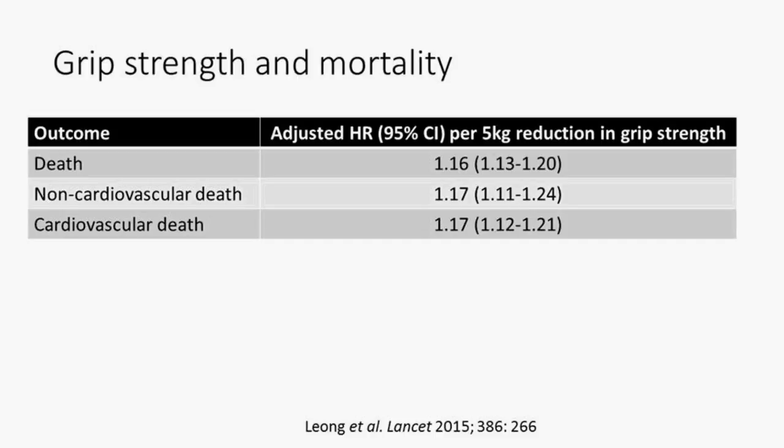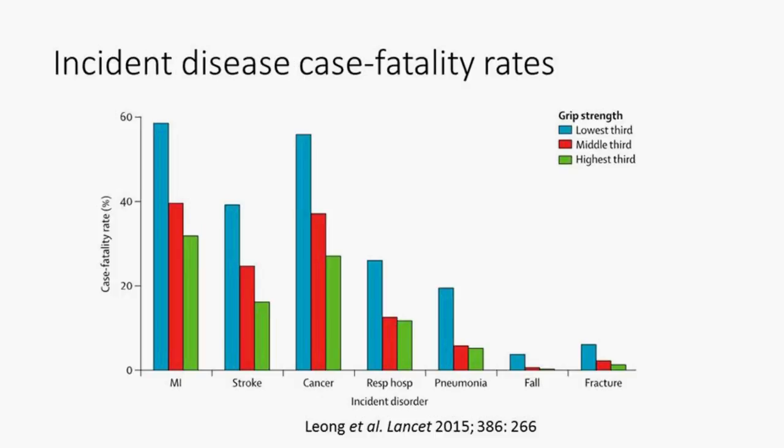Having measured grip strength at baseline, we examined its relationship with subsequent risk of death. For every 5-kilogram reduction in grip strength, the risk of death increased by 16%, and that was consistent for both cardiovascular and non-cardiovascular death, suggesting grip strength may be independent of any particular disease stream.